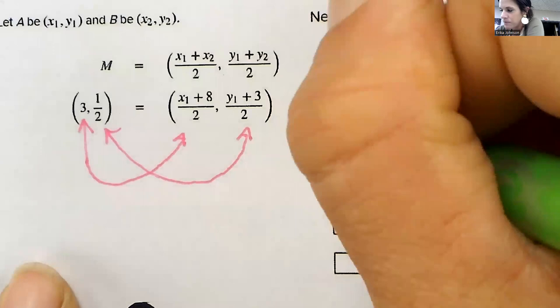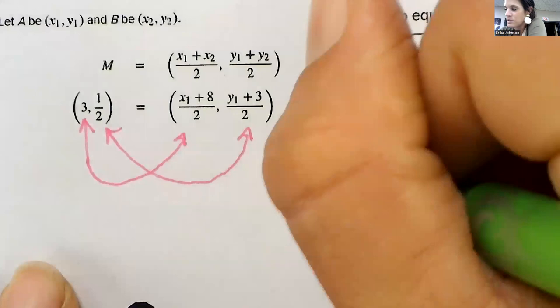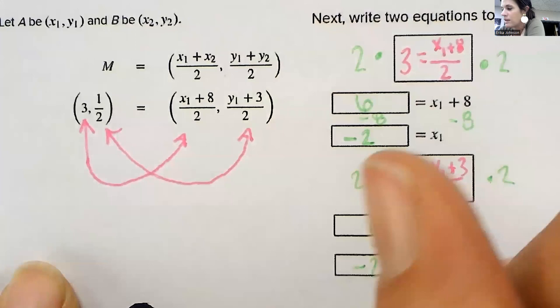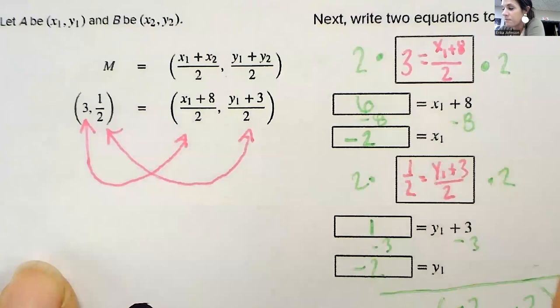And then so on this one, multiply by 2 on both sides. Half times 2 is just 1. And then subtract that 3 over. So you subtract that 3, and that gives you a negative 2. So our point is that negative 2, negative 2, that was A.